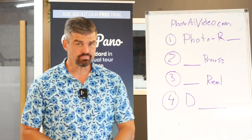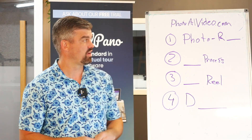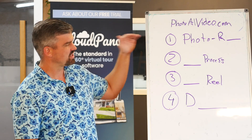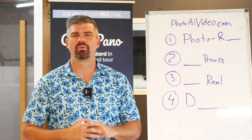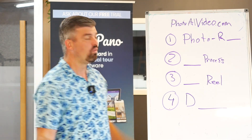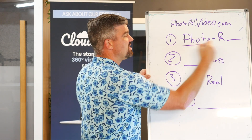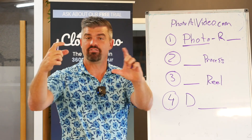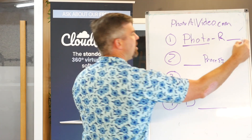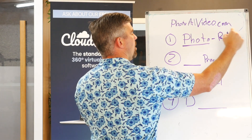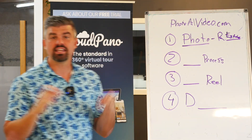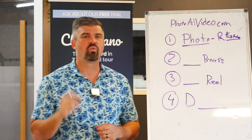The added benefit of using Cloud Pano for Photo AI Video is incredible. Let's get into what you can do and how it works in a quick three-step process. First, you need your photos from your listing. These can be iPhone photos or professional photos — we recommend professional photography. Interior photos perform very, very well with this AI.